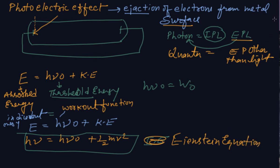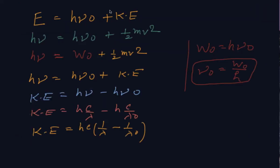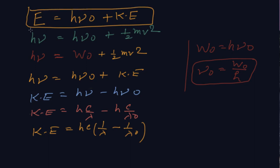Now for modifications and more formulas of the Einstein equation: E = hν₀ + kinetic energy, where E is the absorbed or incident energy represented by Planck's formula E = hν. Substituting: hν = hν₀ + ½mv². Here hν₀ is the work function, threshold energy, or threshold frequency — the minimum amount of energy required by the electron to release itself. W₀ = hν₀.